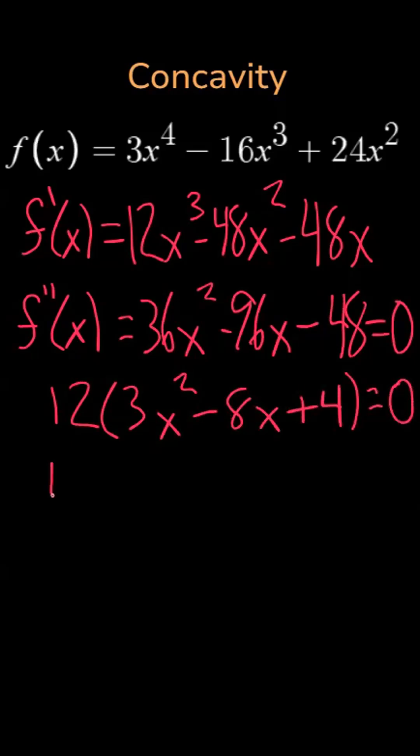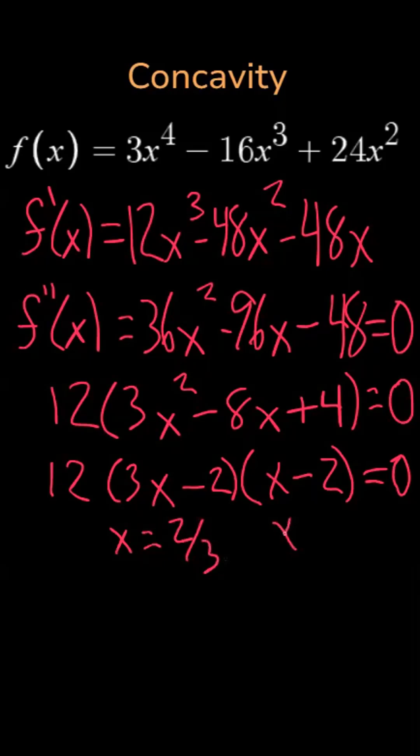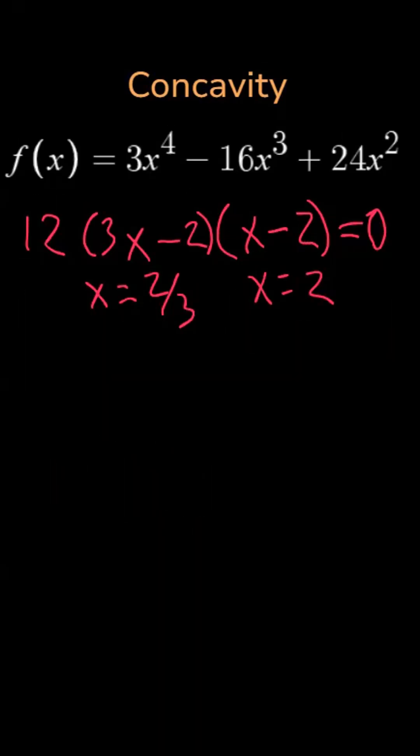You factor out a 12 and factor the trinomial, and then solve each factor for x. You would get x equals 2/3 and x equals 2. And we use those values to make our sign chart.